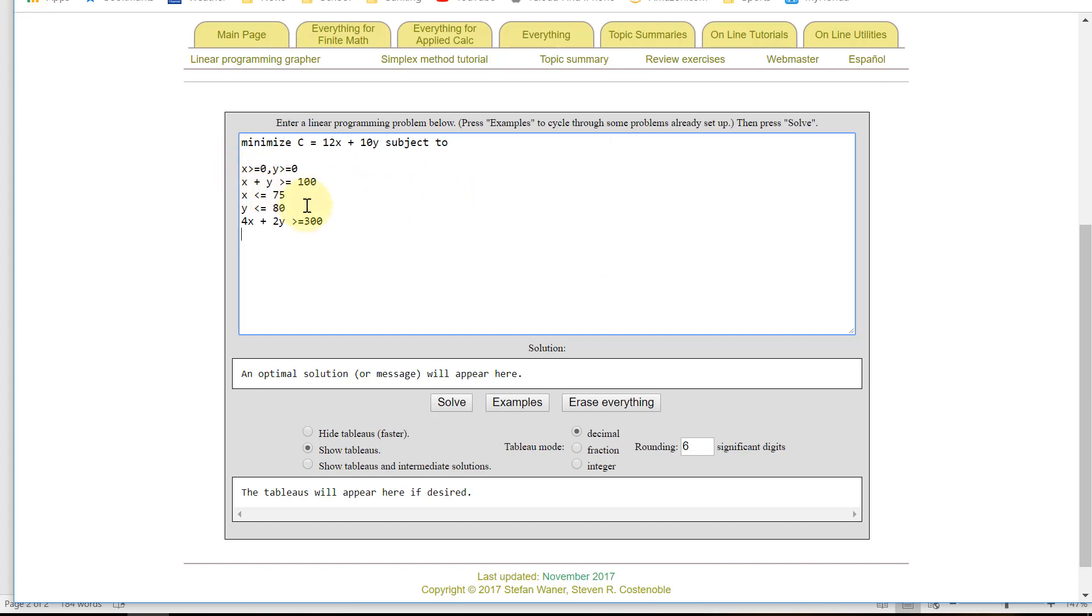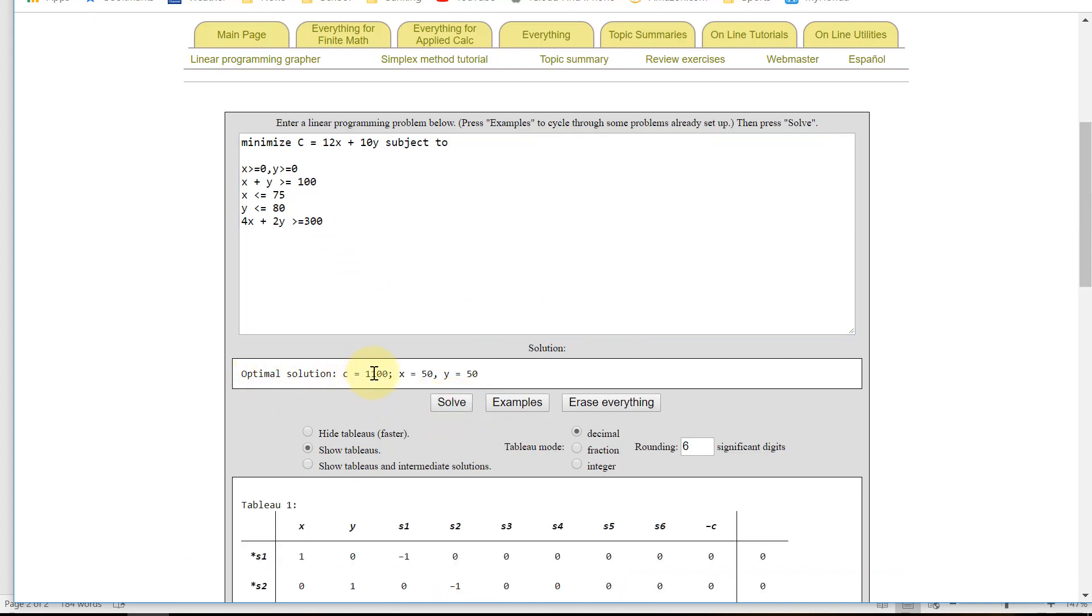Okay, so I've got everything typed in here. Let's see what happens. Yeah, that's it. 1,100, 50, and 50. That's exactly what we got working that out by hand in the previous lesson.